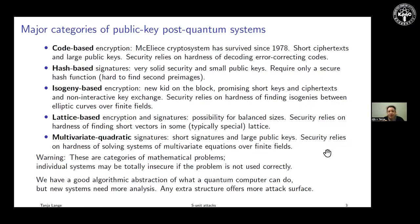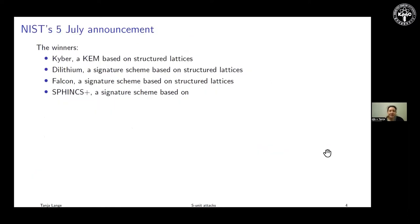Lattices is the topic of this talk. Codes — McEliece, which you mentioned in the introduction, is of course a topic near to my heart, but also a somewhat boring topic because the system is there and nothing really happened. So I'm talking today about lattices, and a particular type of lattice. Lattices are important for the NIST winners: out of the four winners — Kyber, Dilithium, Falcon, and SPHINCS+ — the first three are lattice-based systems, and SPHINCS+ is based on hash functions.